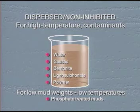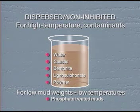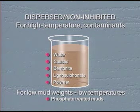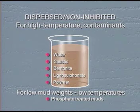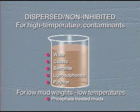Phosphate-treated muds are used to drill shallow wells with low mud weights and low temperatures. Again, calcium must be removed from the system to prevent precipitation.